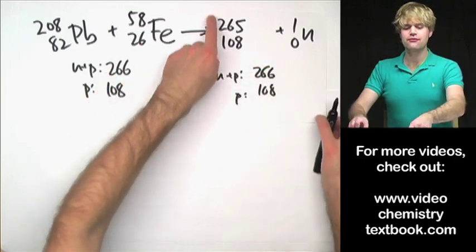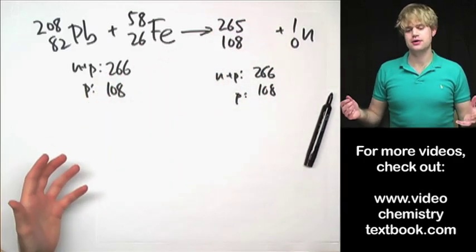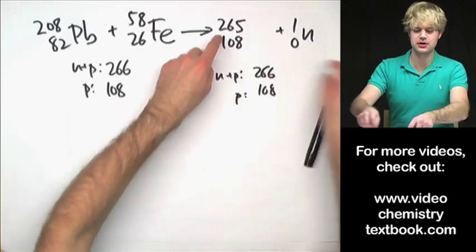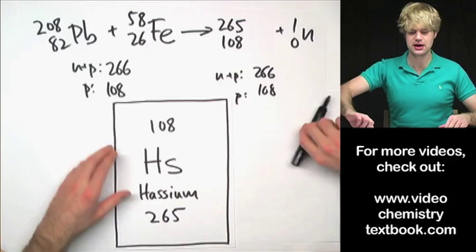Now, how do I figure out what element this is? I look on the periodic table for the element that has an atomic number of 108. It turns out that it's Hassium.